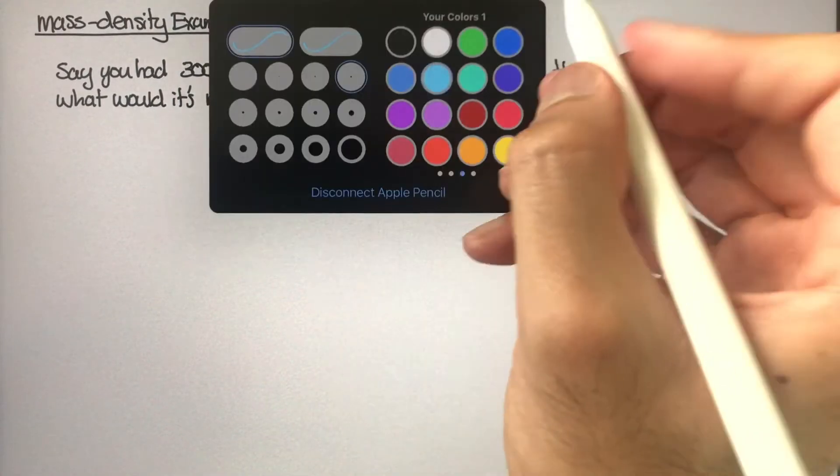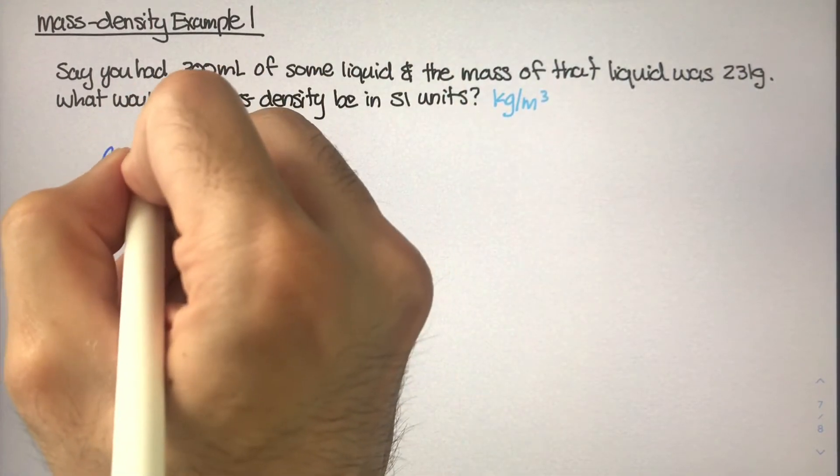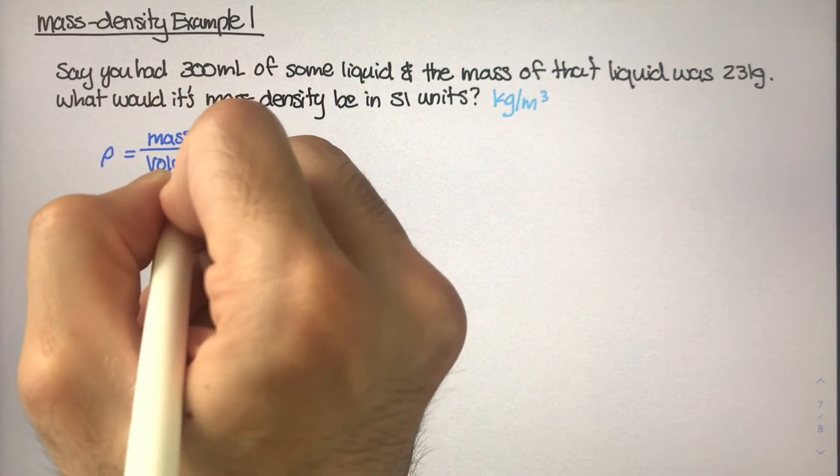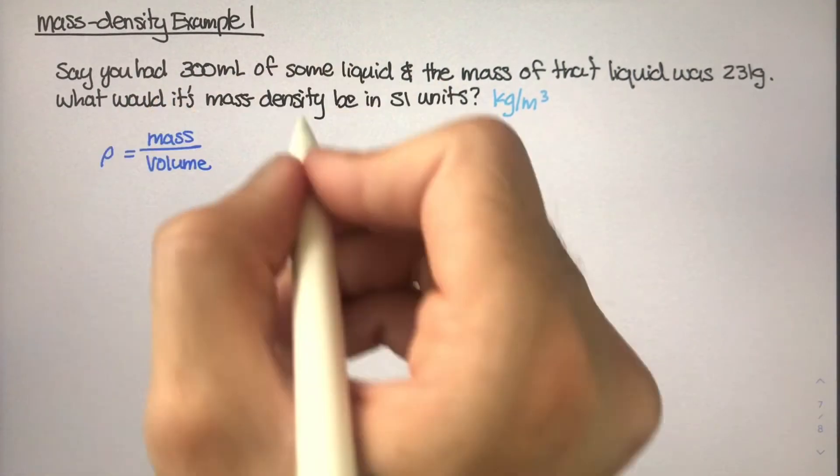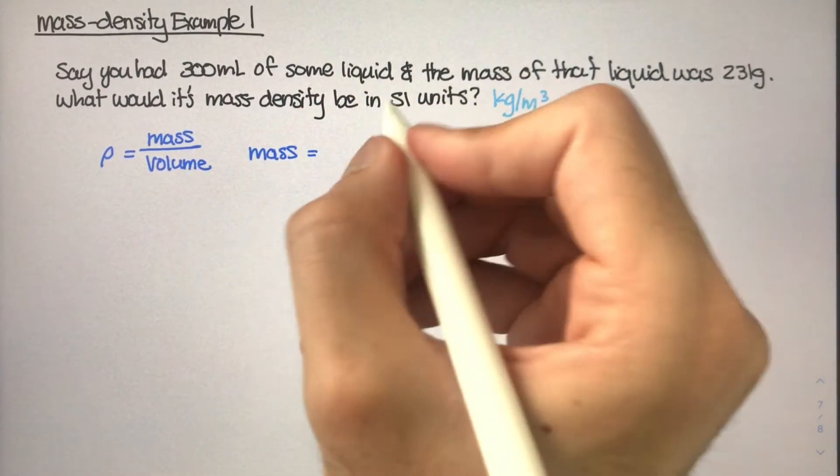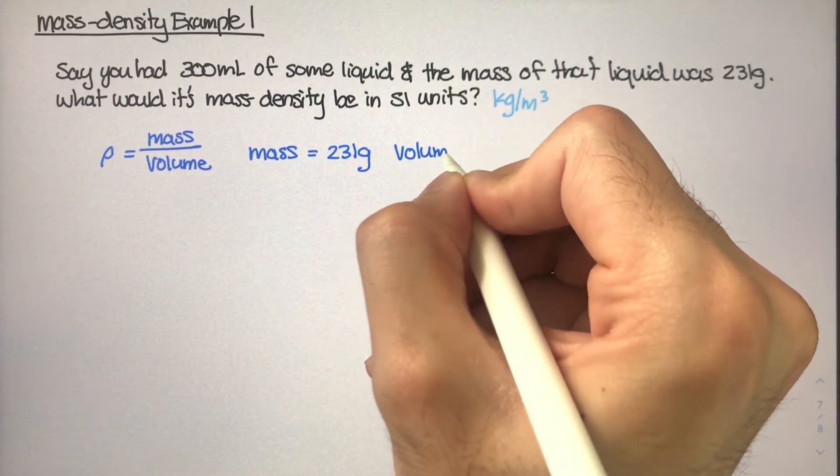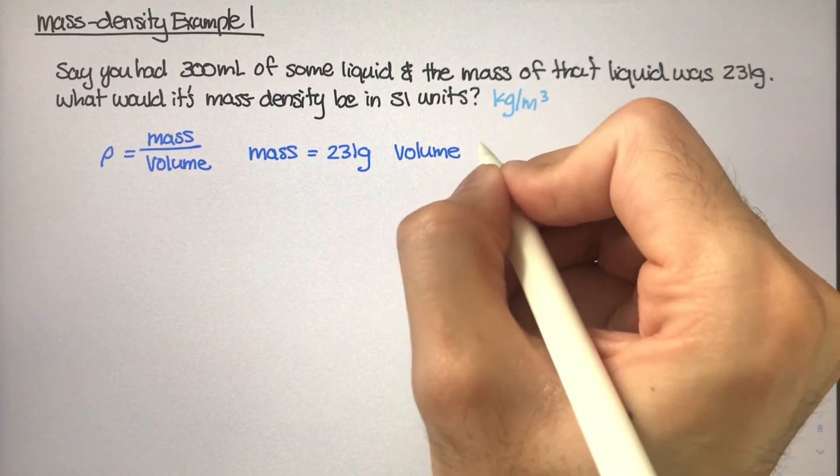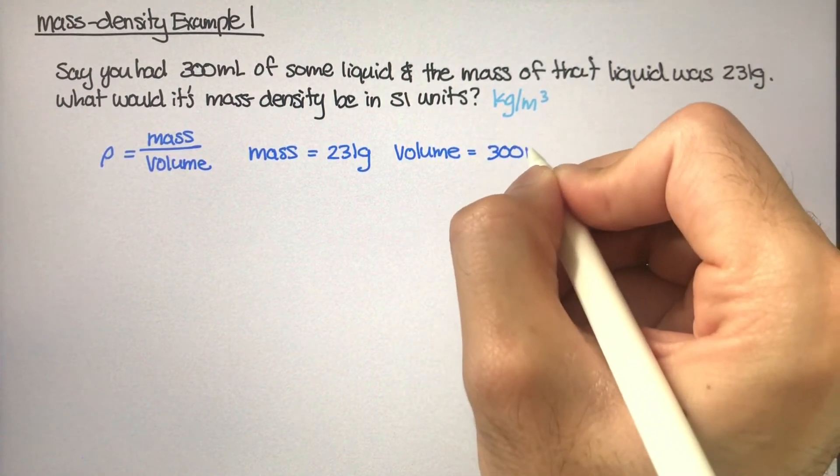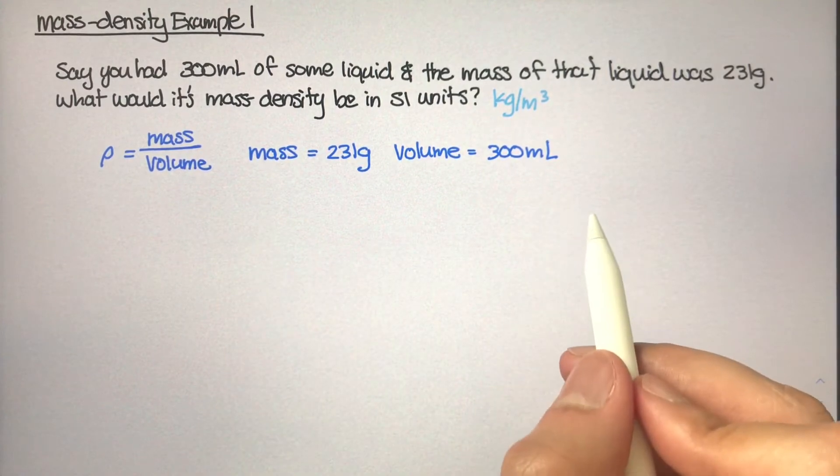Right now we know that mass density, which is rho, is equal to mass divided by volume. We know that the mass of this liquid is 231 grams, and the volume that this mass is contained in, or this liquid is sitting in, is equal to 300 milliliters.